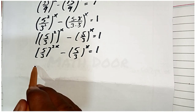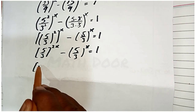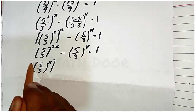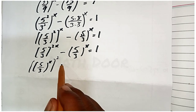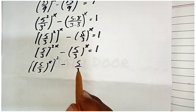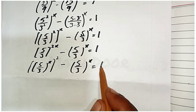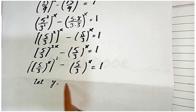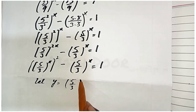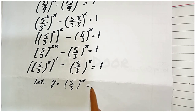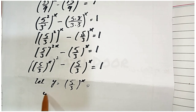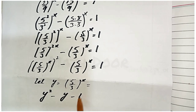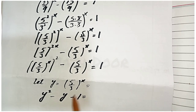In the next step, we can write this as (5/3)^x all squared, minus (5/3)^x equal to 1. We let y equal to (5/3)^x and substitute: this becomes y² minus y equal to 1.